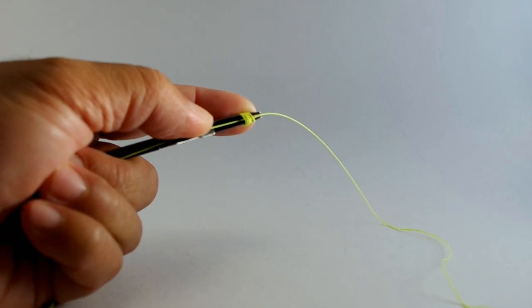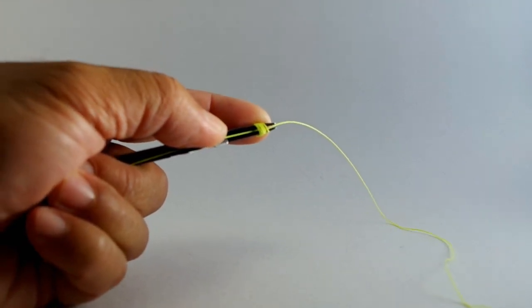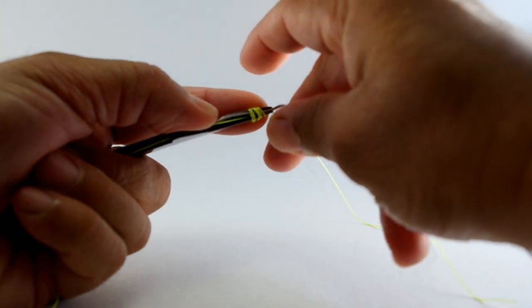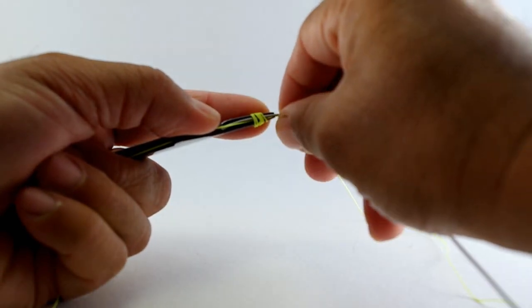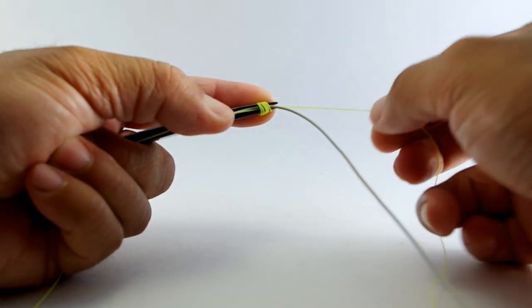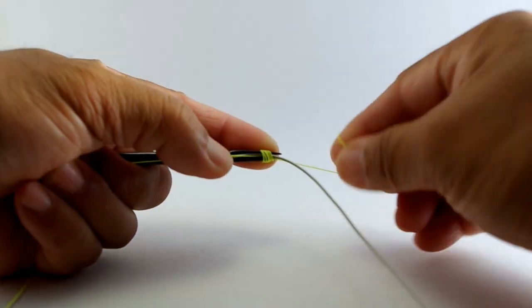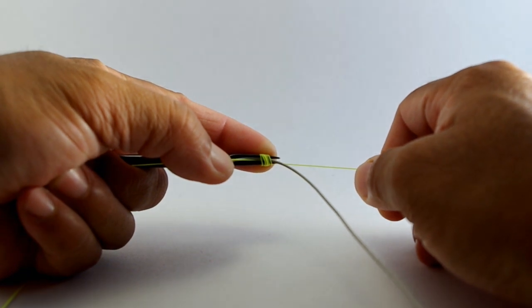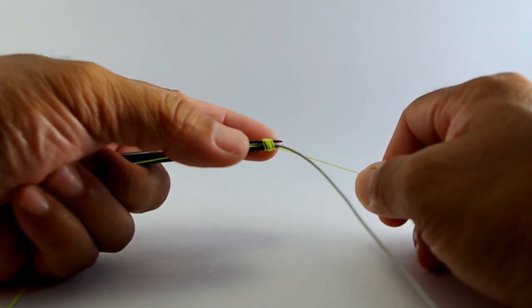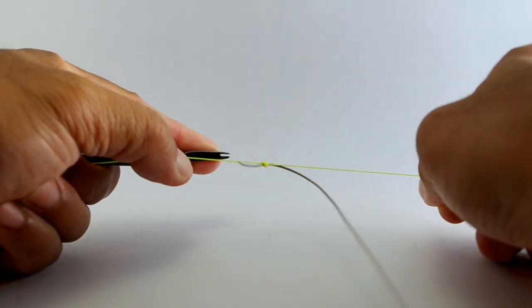And then what we'll do is we'll take the fly line, run it through, and then the front end here. And then the important part is to make sure you do this quickly and pull, keeping a good handle or tension on this side of the line. And we'll just pull. And there you go.